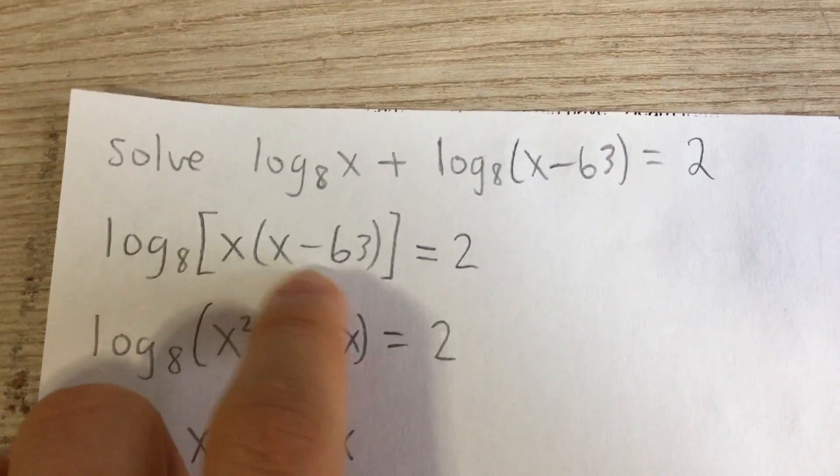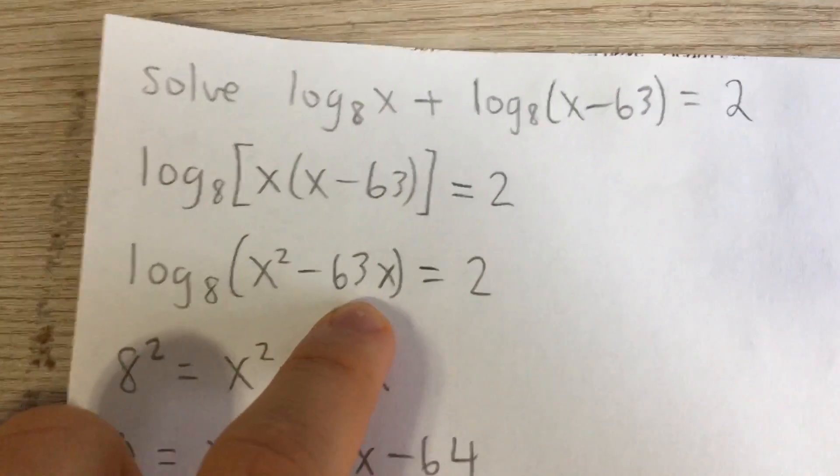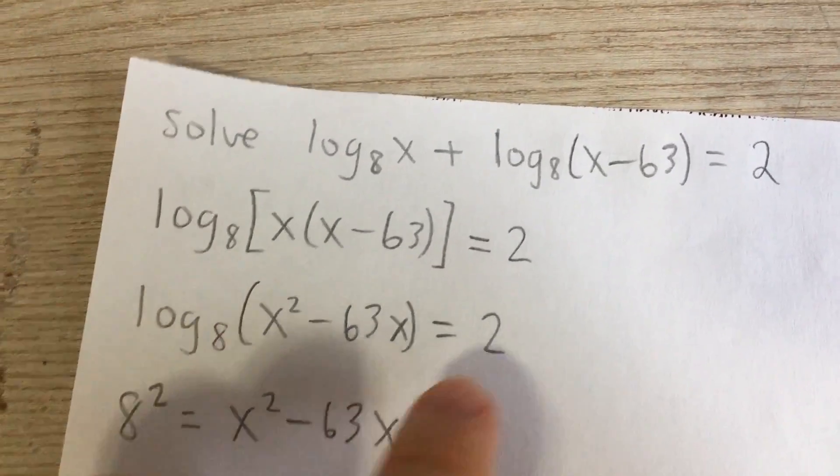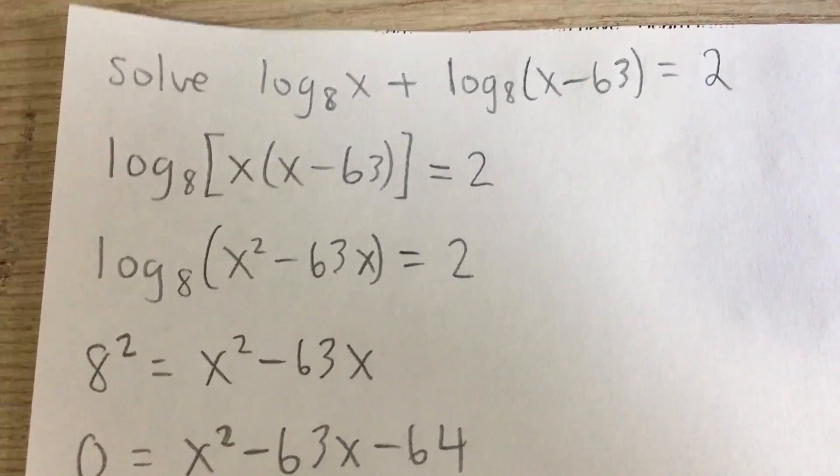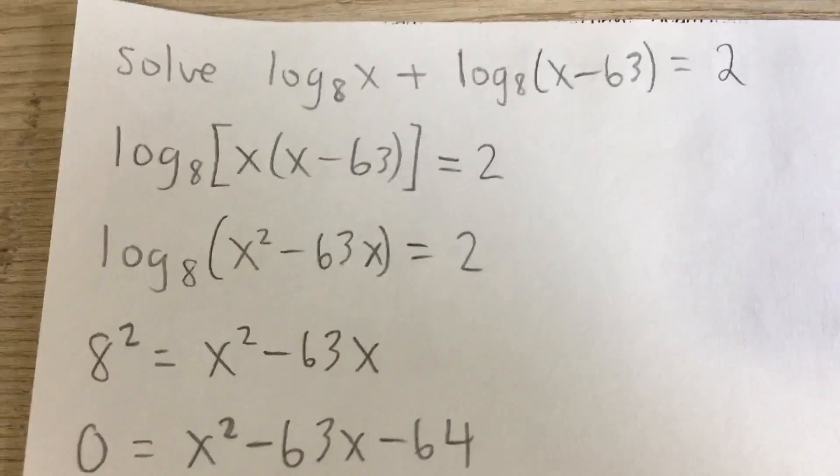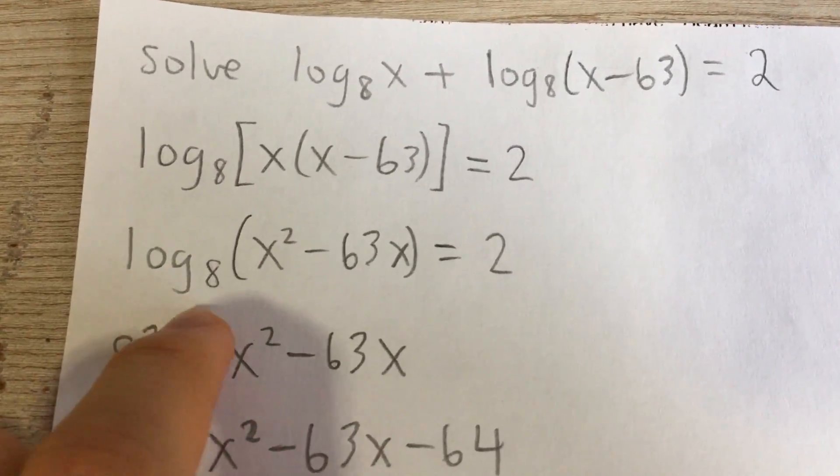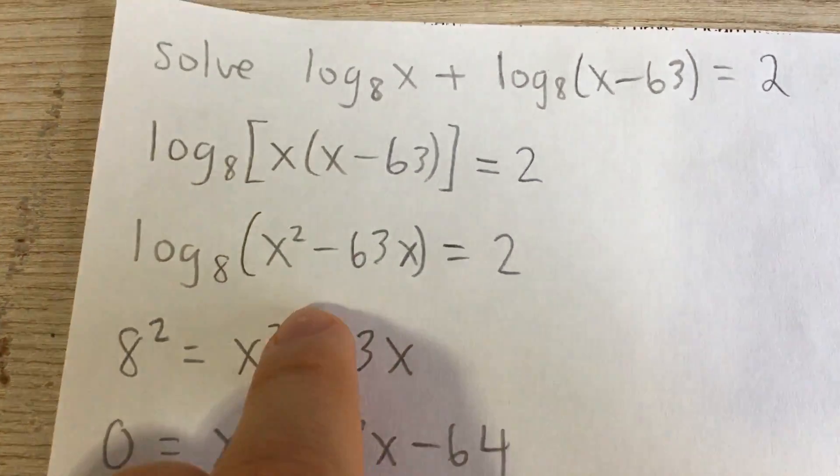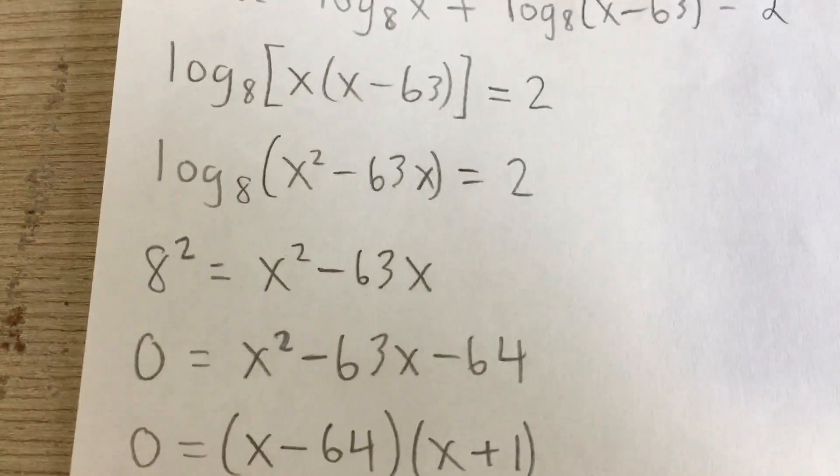We can multiply those to get x squared minus 63x. Now we have a logarithm equal to a number. So what we can do to solve for x is convert it to exponential form. In other words, we can say that 8 squared equals x squared minus 63x.